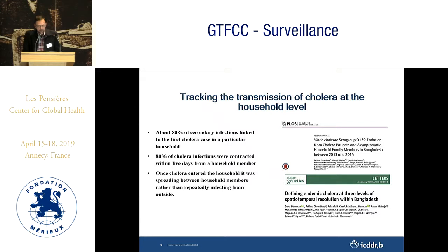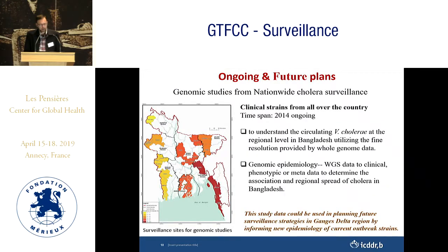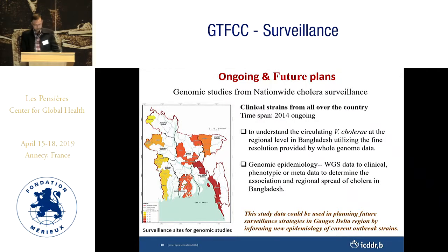Regarding molecular testing and whole genome sequencing, we have selected some samples from the national cholera surveillance for whole genome sequencing since 2014, to understand the circulating Vibrio cholerae at the regional level in Bangladesh utilizing the fine resolution provided by whole genome data. This study data could be used in planning future surveillance strategies in this region, for new epidemiology and current outbreak strains.